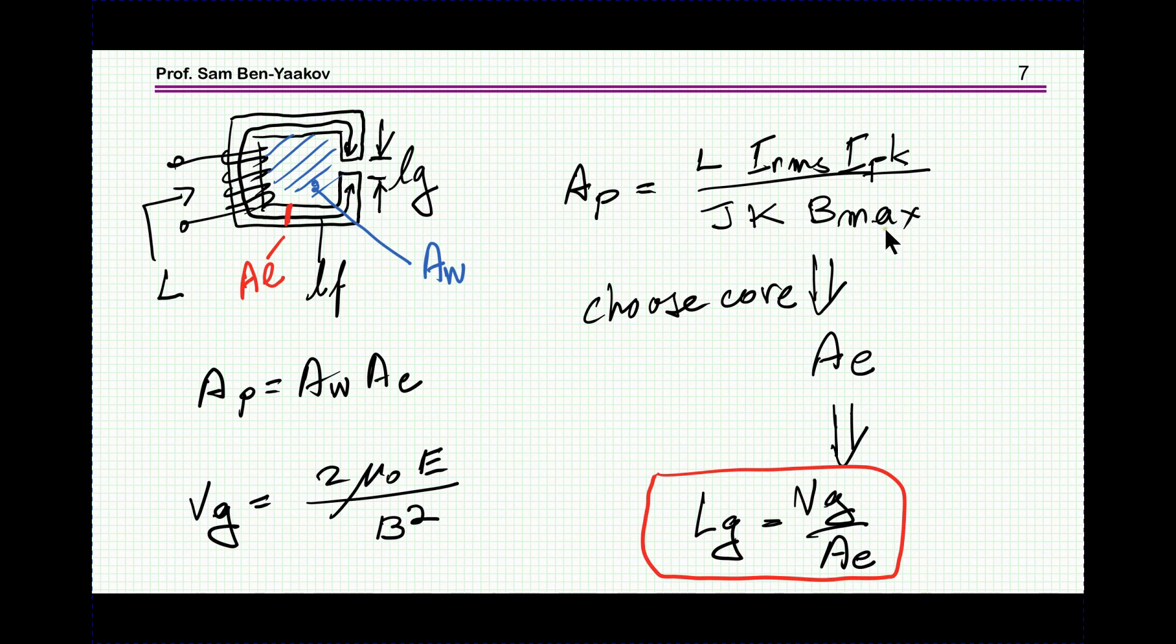Bmax is the B that we would like to have. It could be due to saturation if it's low frequency; for high frequency it'll usually be loss consideration.